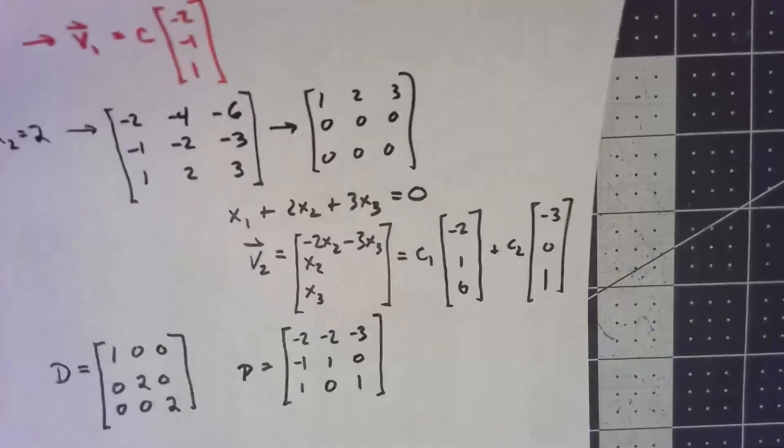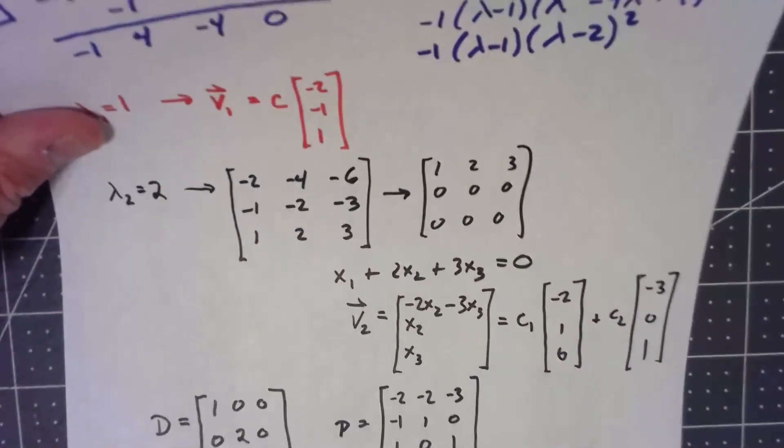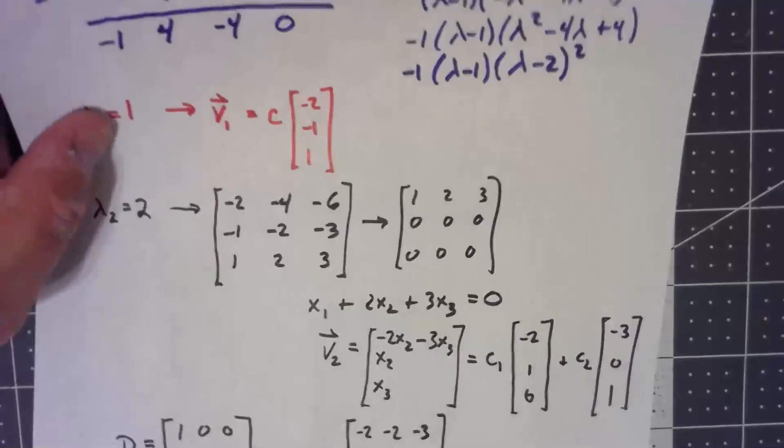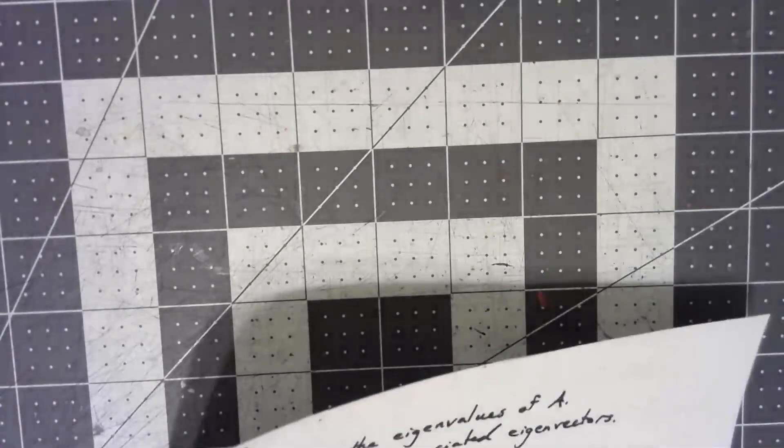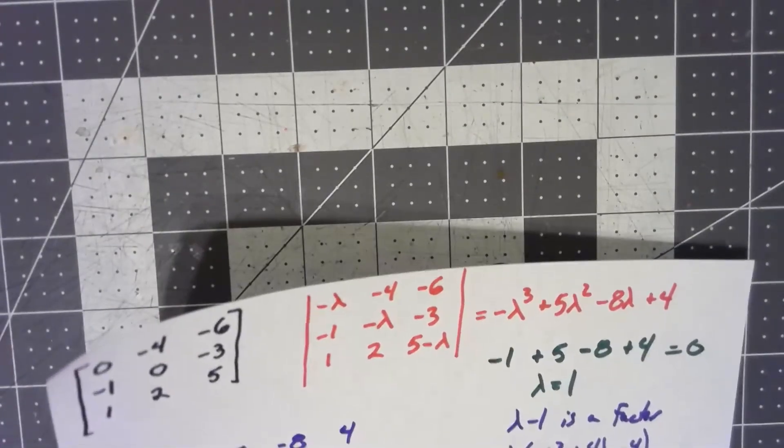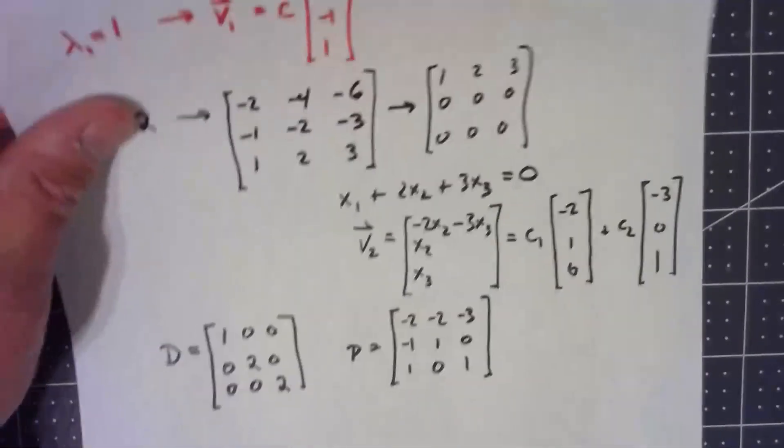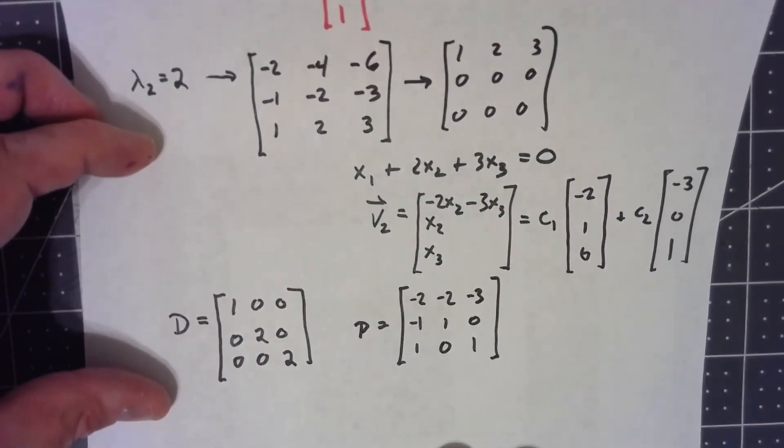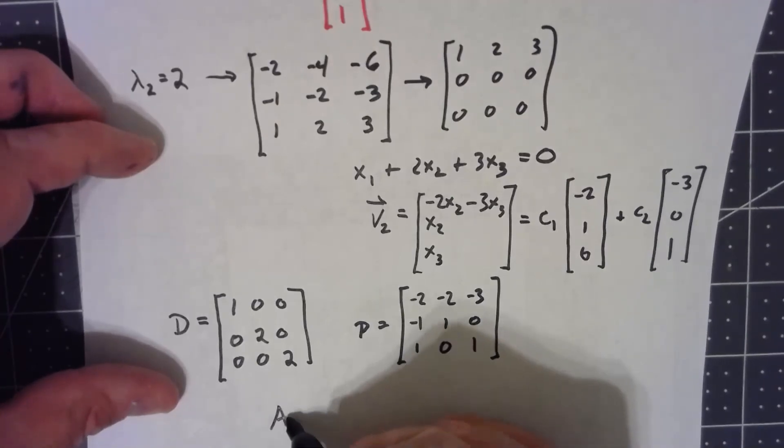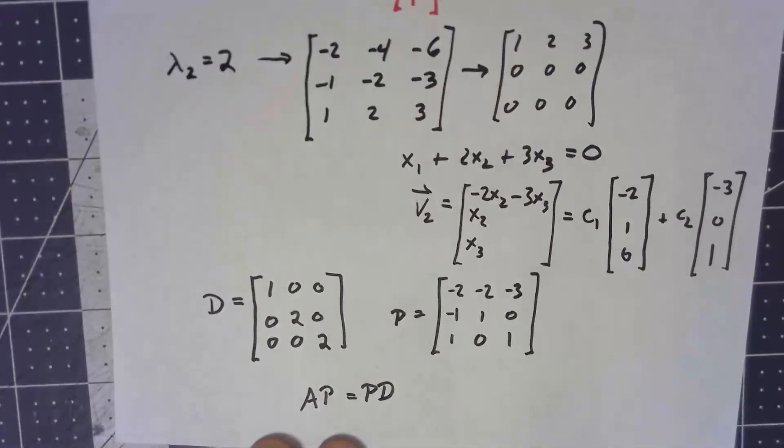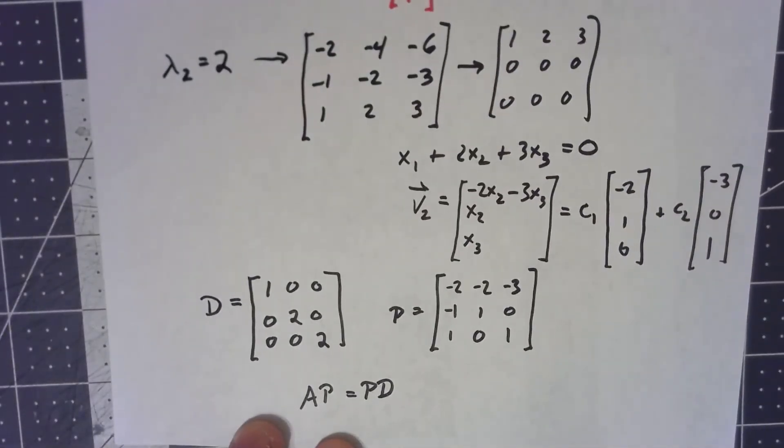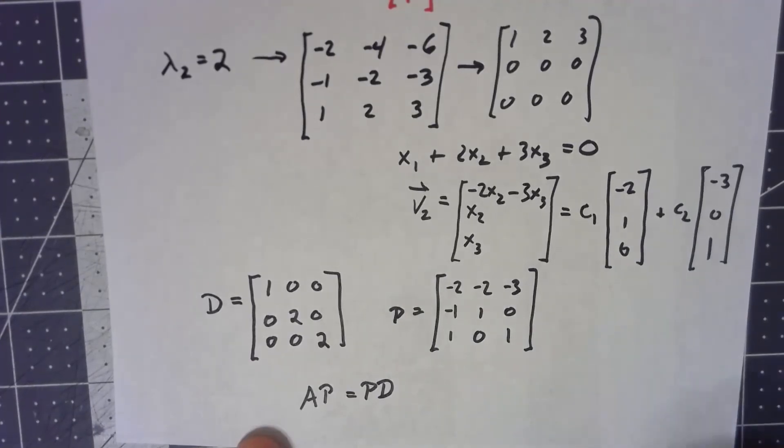This video is getting really long, so I want to wrap up now. What we really should do to check that we did this right is check that A is PDP inverse. But to be honest, it's usually not done that way. Instead, just like we started the last video, what we can do is say AP equals PD, do those two calculations, and check it that way. And again, this video is getting long; I'll leave that for you to do to check.